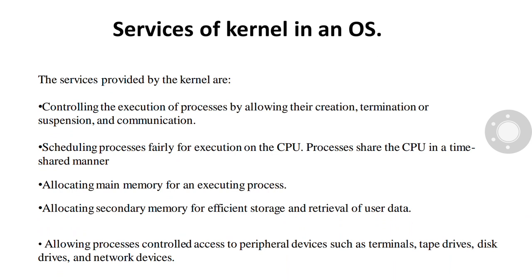The third service is allocating main memory for an executing process. The kernel allows processes to share portions of their address space under certain conditions, but protects the private address space of a process from outside tampering. If the system runs low on free memory, the kernel frees memory by writing a process temporarily to secondary memory called a swap device.